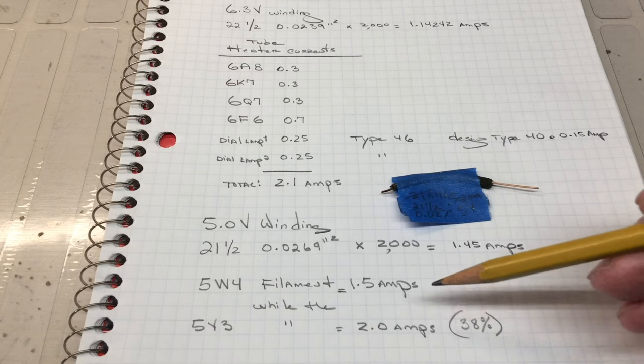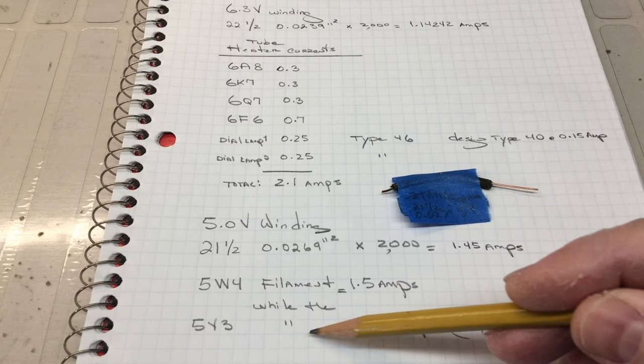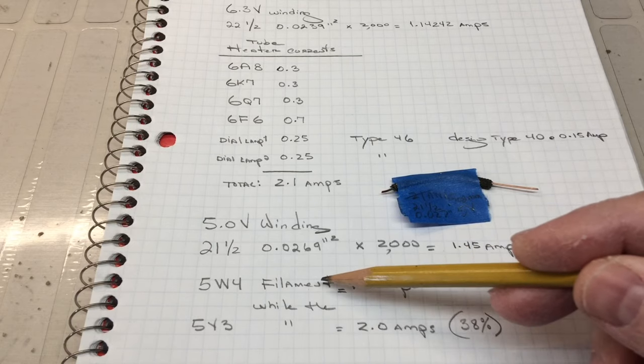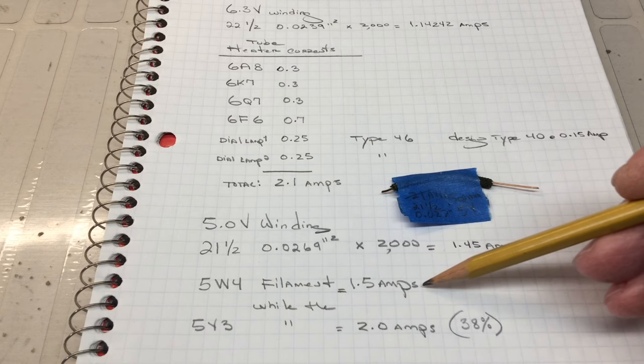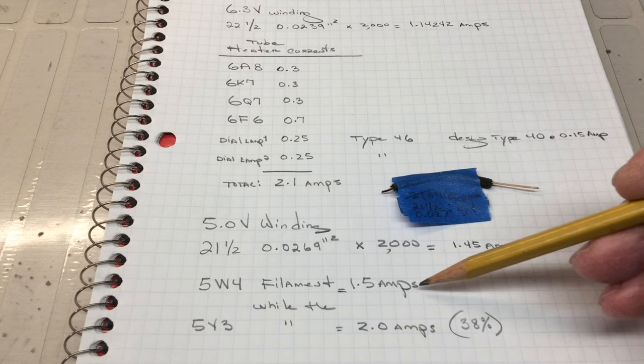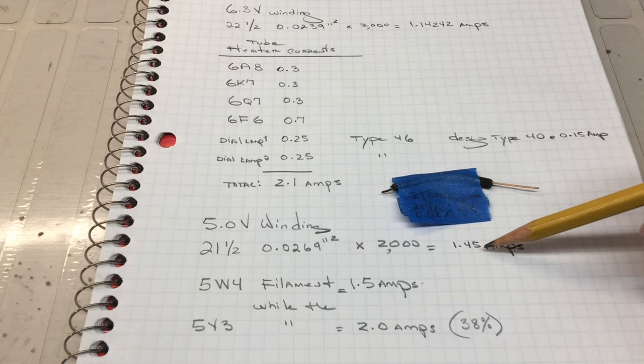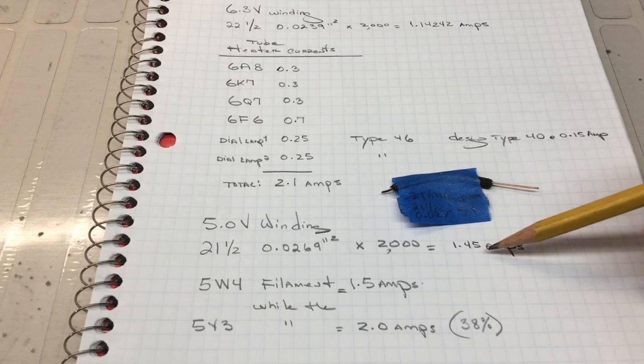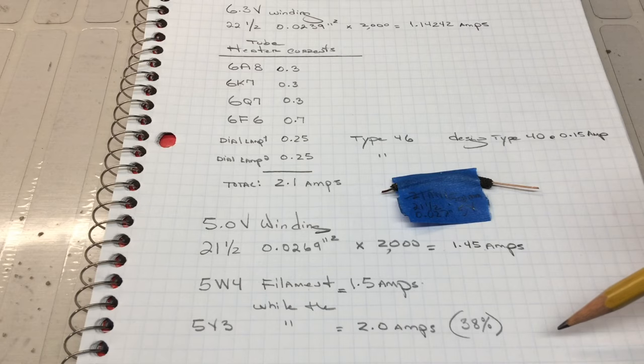One thing interesting too, you'll notice this particular receiver, someone had substituted a 5Y3 for the 5W4. The 5W4 rectifier, I think it's the only rectifier operating at 1.5 amps. So, you know, we're still stretching the transformer right here to max capacity with the 5W4, but you can see the 5Y3 at 2 amps puts it 38% over.